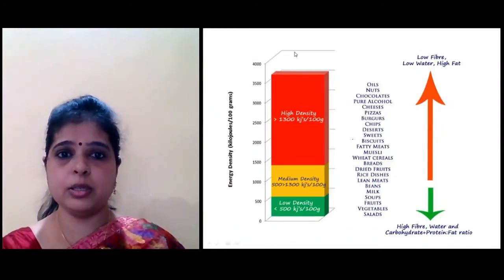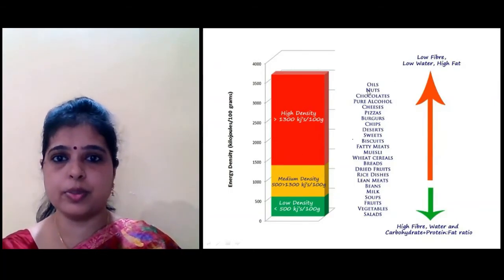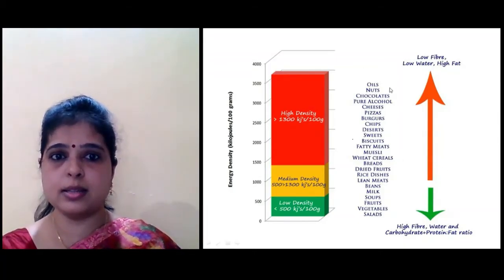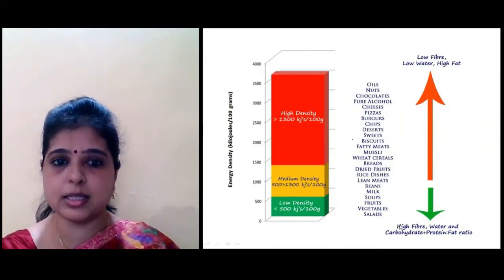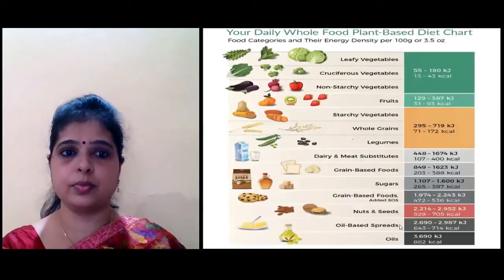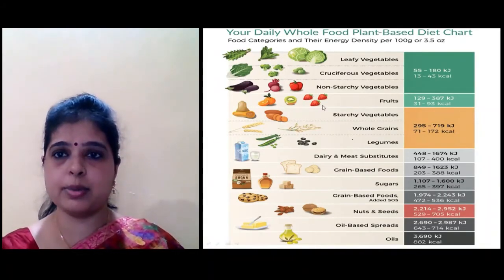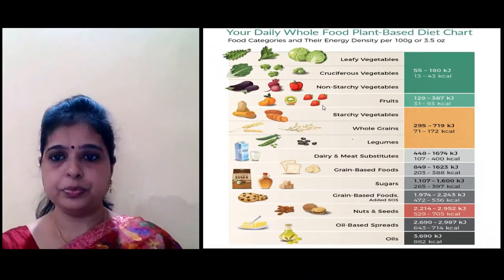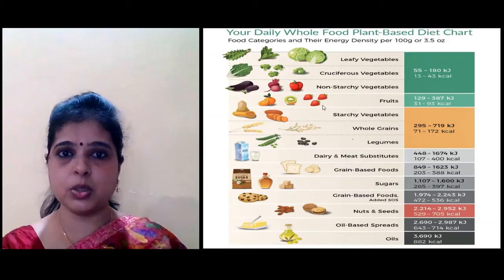This table shows high density food, medium density, and low density food — illustrating increasing energy density. In oils there is higher energy density, but in fruits and vegetables there is low energy density. This is your daily whole food plant-based diet chart — just go through this table.